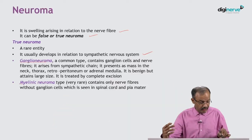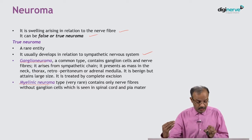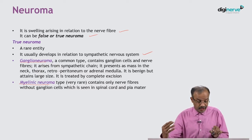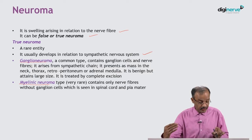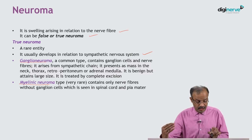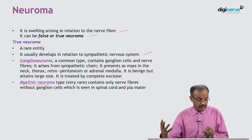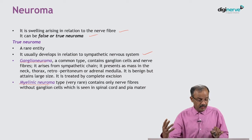The next type is also very rare. Myelanic neuroma contains only nerve fibers without ganglion cells, unlike ganglioneuroma where ganglion cells are present. Myelanic neuroma has no ganglion cells and is seen in the spinal cord or pia mater. So it is rare.